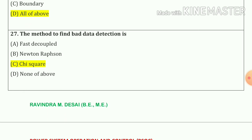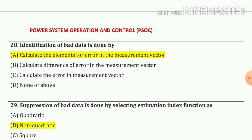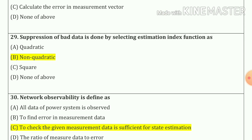Question number 27: The method to find bad data detection is option number c — chi-square method. Question number 28: Identification of bad data is done by calculating the elements for error in the measurement vector. Option number a. Question number 29: Suppression of bad data is done by selecting the estimation index function as non-quadratic. Option number b.